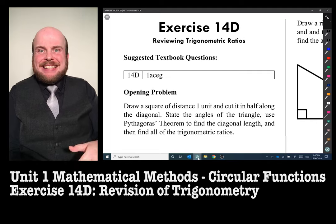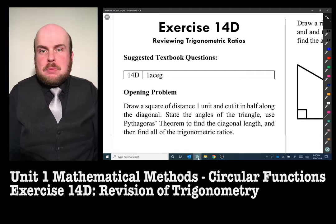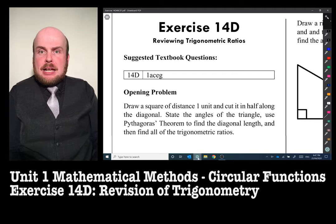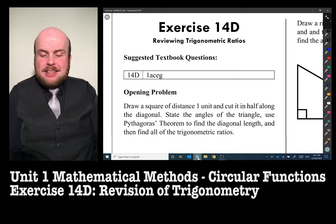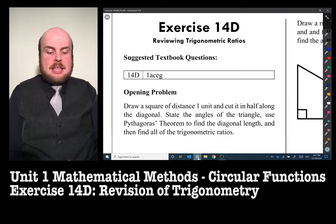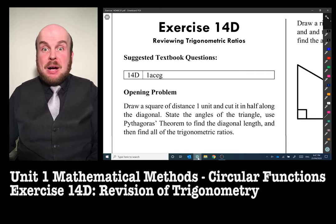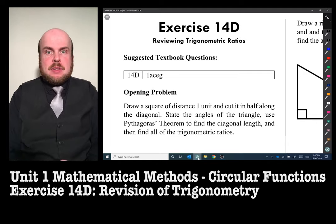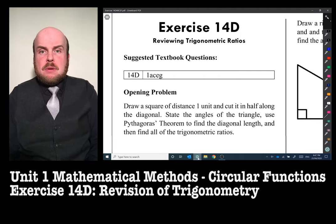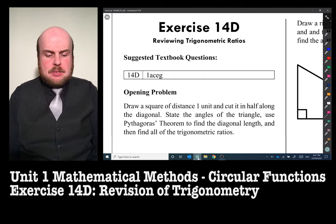I want you to draw a square, distance one unit—centimeters, miles, whatever you wish—and cut it in half along the diagonal, state the angles of the triangle, use Pythagoras's theorem to find the diagonal length, and then find all of the trigonometric ratios. There is a buffet of things to do in this particular question, so let's make that a little bit easier.